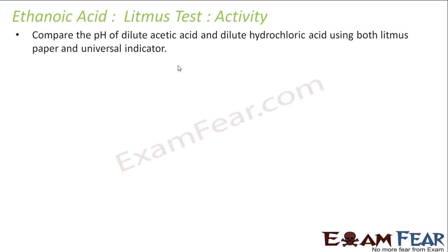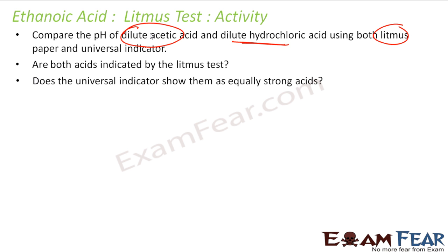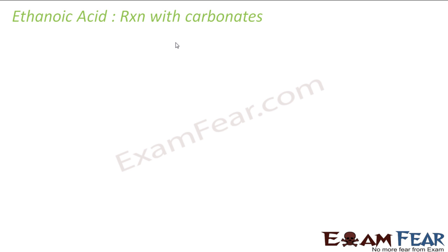For an activity, what you can do is compare the pH of dilute acetic acid, which is an organic acid, and dilute HCl using a universal indicator. You will observe that HCl is a stronger acid and acetic acid is a weak acid. This is an activity you can do.